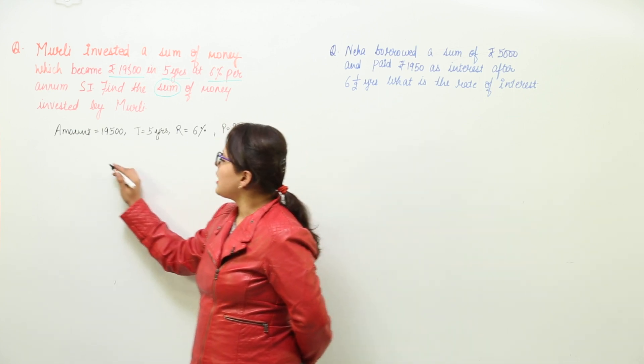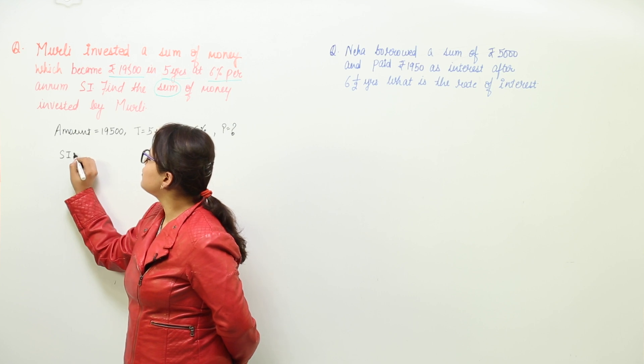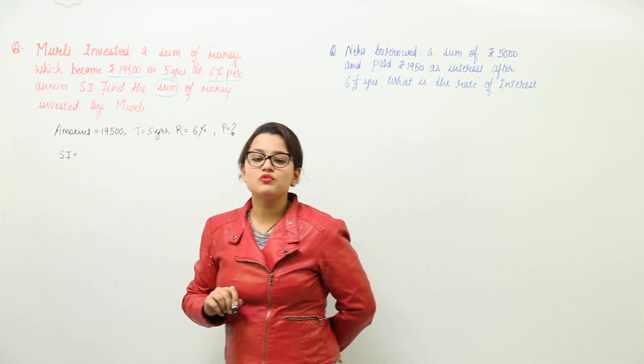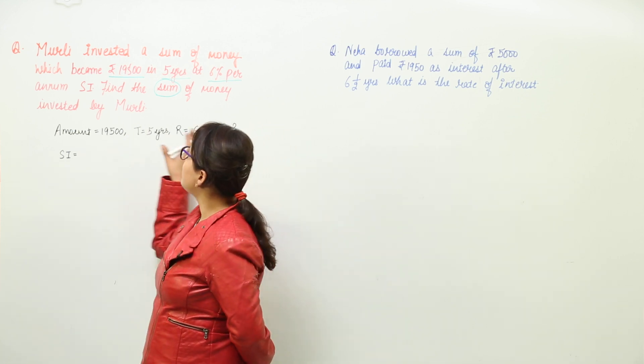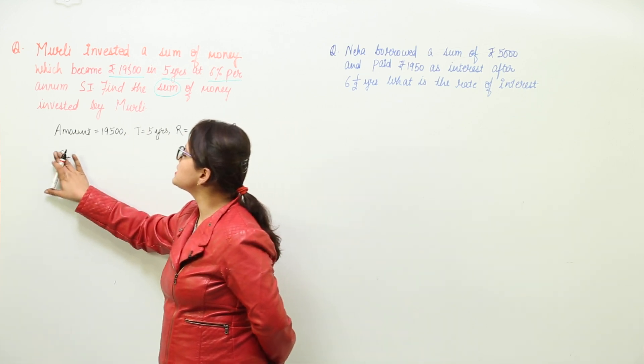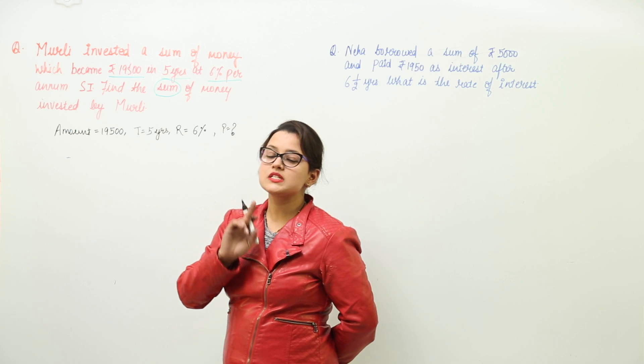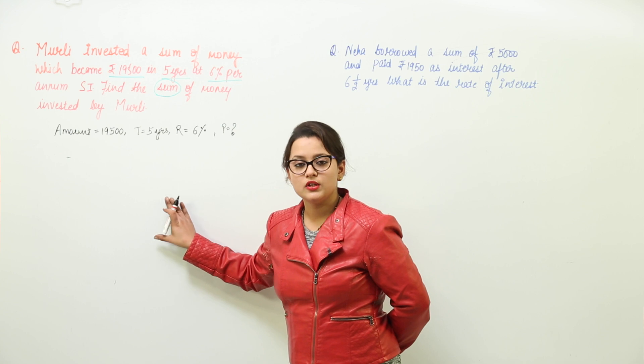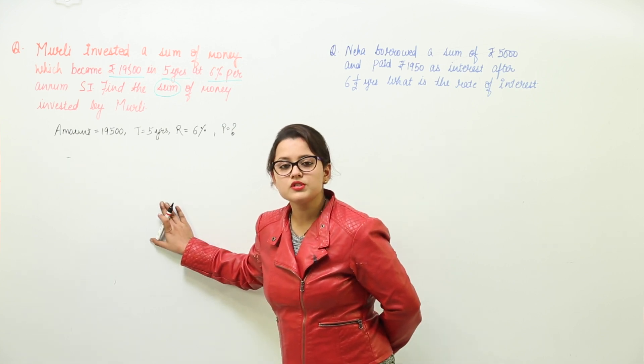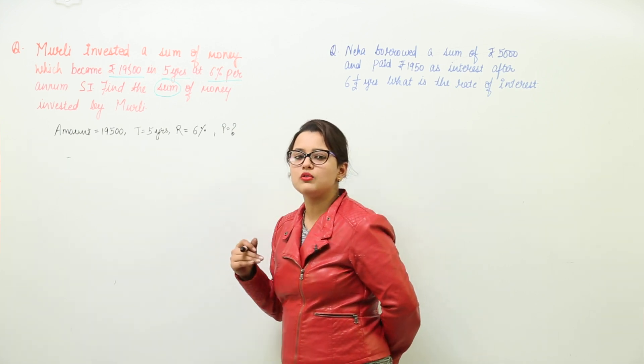As we can start with the simple interest, but for finding out the simple interest we need to find out the principal only. So what should we do? The value that is to be found, let us start assuming that first. Do not start with simple interest. Why? Because simple interest again will be requiring your value of principal. So first of all let us assume some value of principal.